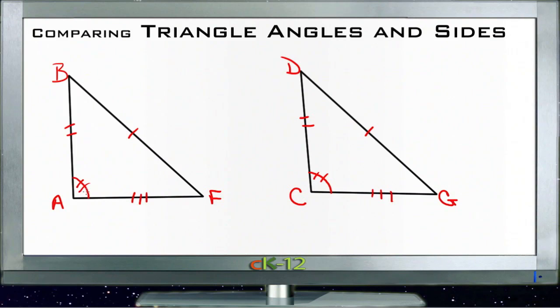If I took away that equality and said that angle C was greater than angle A, then that would tell us that DG was no longer equal to BF, but that DG was greater than BF, because a greater angle means a greater side.